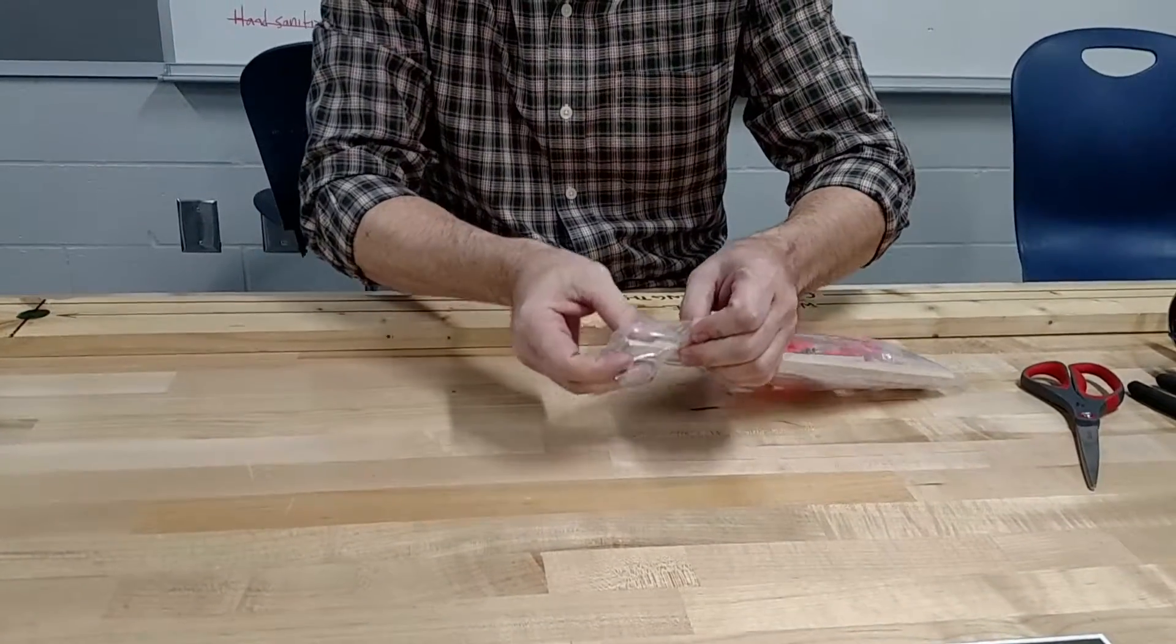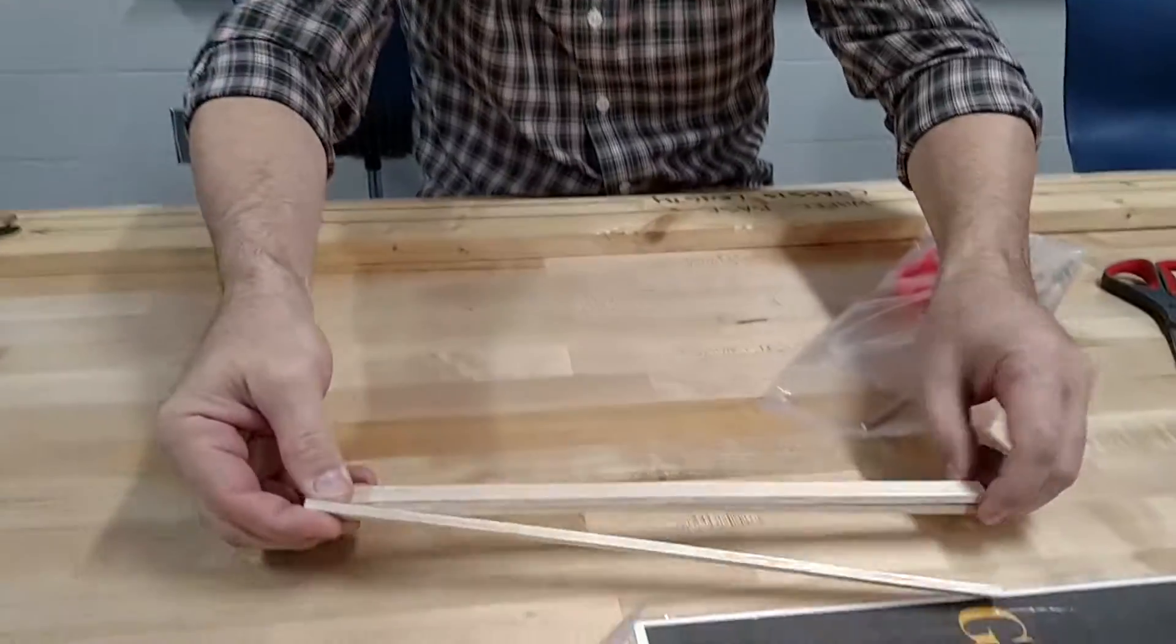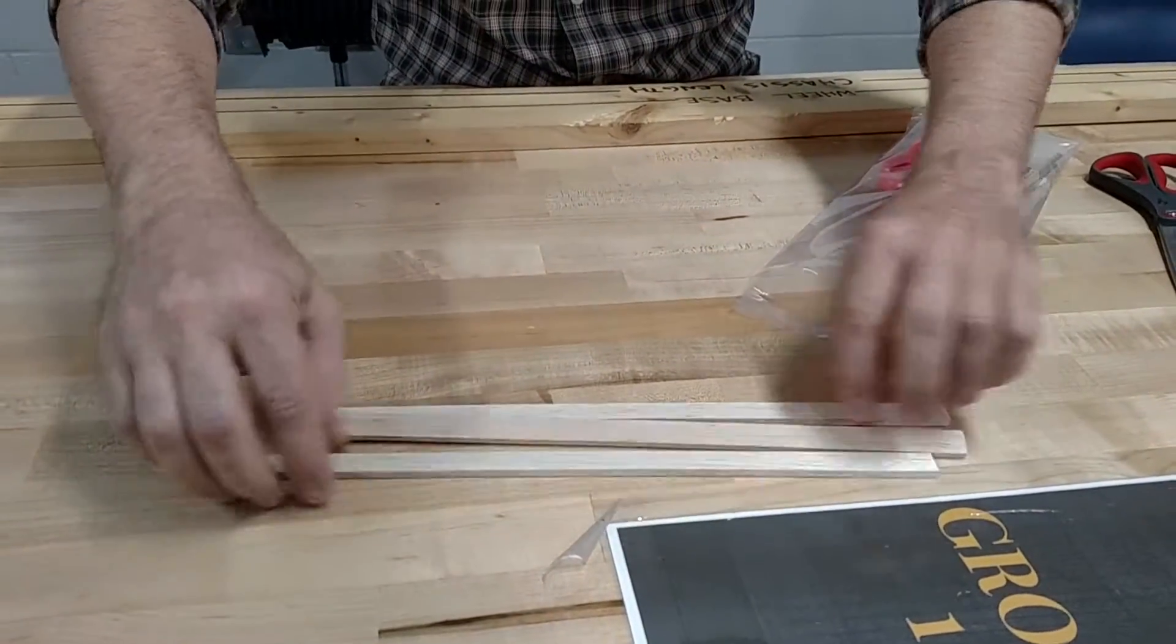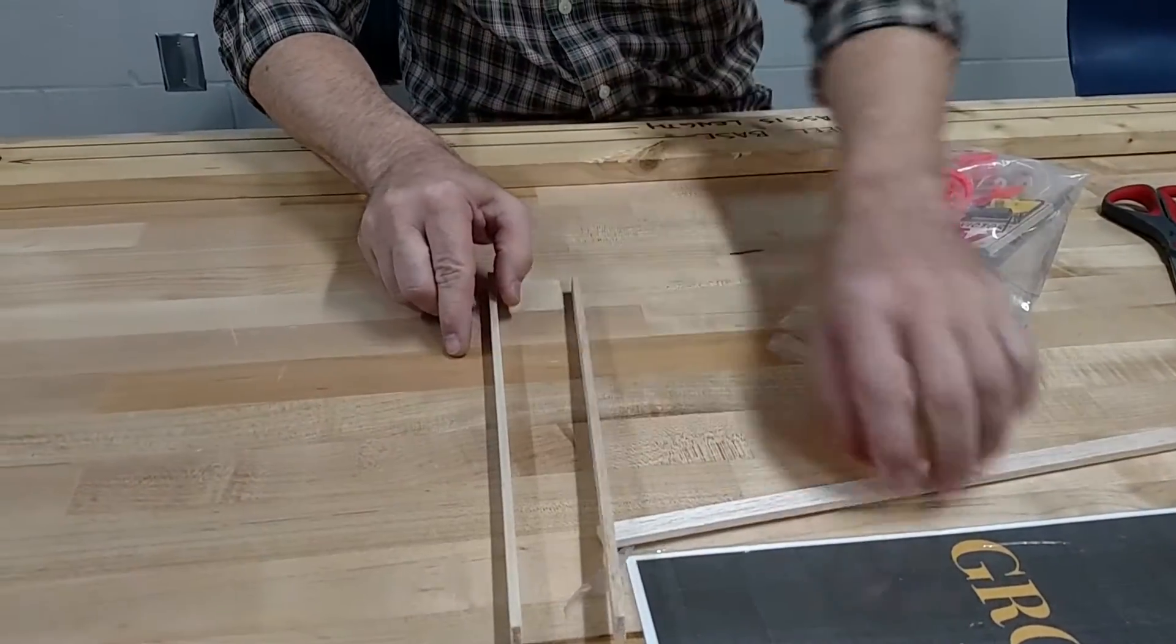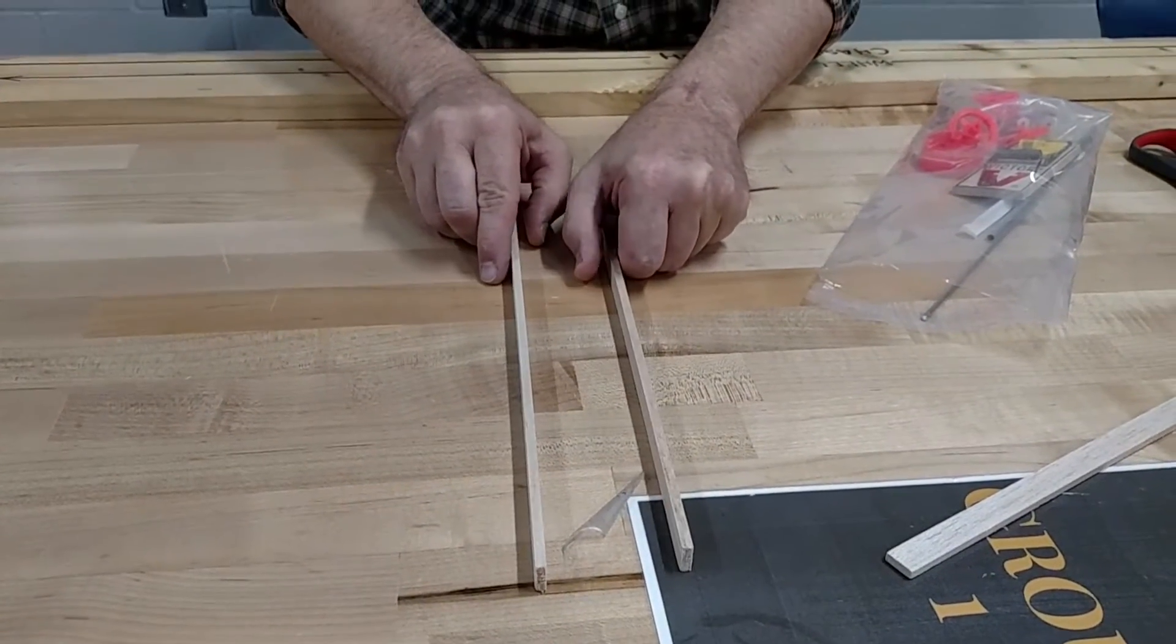First thing we have are chassis rails. There's actually three of them in here, but we really will end up only needing two of them. So these are going to be the side rails of the car. It'll end up looking something like that.